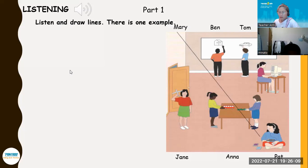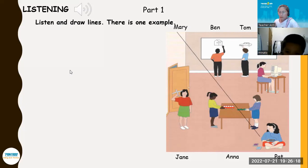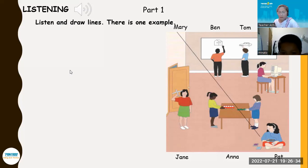Four. Look at Anna. Where is she? She's standing by the door. Is she wearing a red T-shirt? Yes, she is. And she's got a toy plane. Five. Can you see Pat? Yes, I can. She's working. What's she doing? She's working at the computer. Oh yes, she likes that.